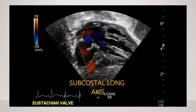Here's a subcostal long-axis pediatric view showing the atrial septum with what looks like a flap and just a little bit of color flow visible, indicating an ASD. This view is the bread and butter of pediatric echo, so it's very important to learn and execute well.